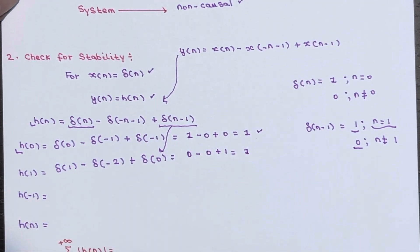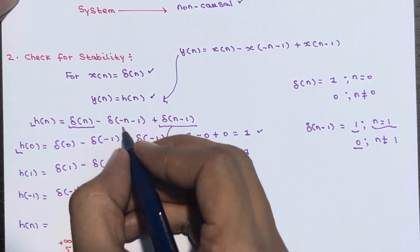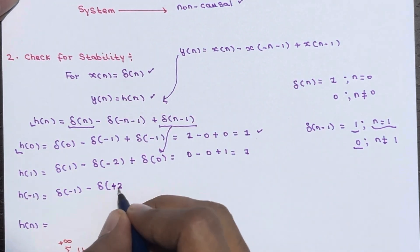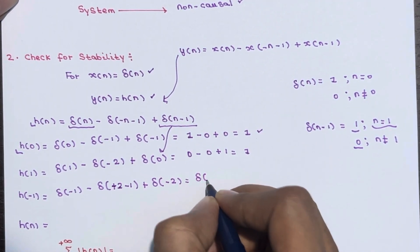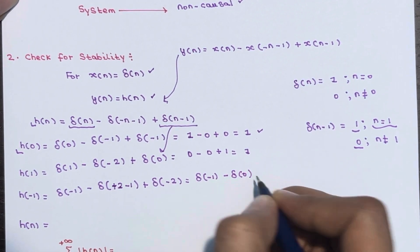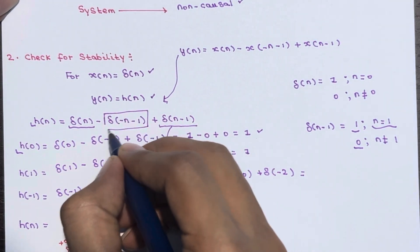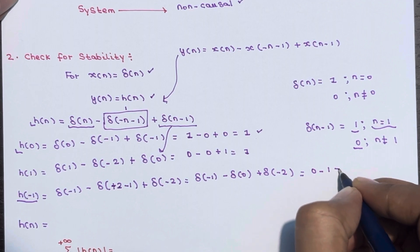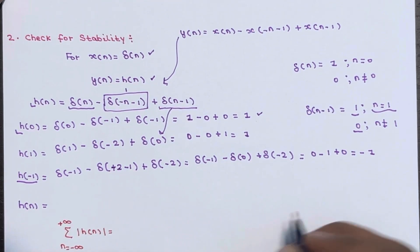Now let's calculate h(-1). Substituting n = -1: δ(-1) - δ(-(-1)-1) + δ(-1-1) = δ(-1) - δ(0) + δ(-2). We are at n = -1, so only the δ(-1) term is defined, giving 1. The result is 1 - 0... wait, the δ(0) term gives 1, so we get 0 - 1 + 0 = -1. For all other values of n, h(n) = 0.